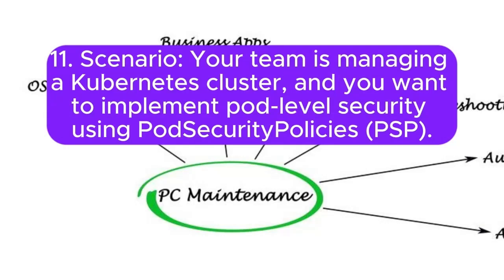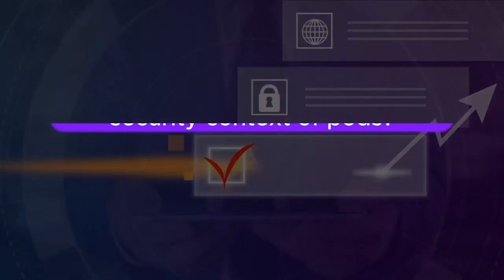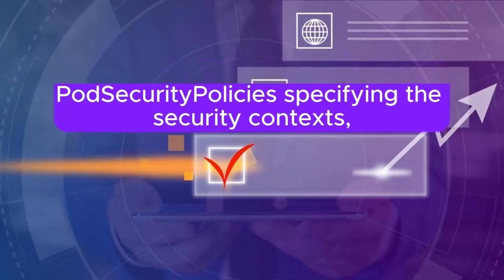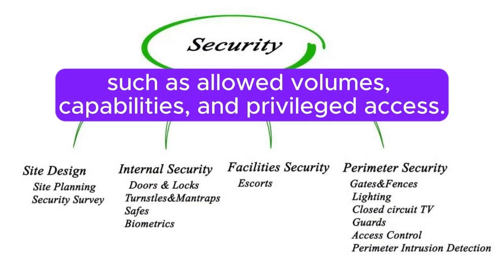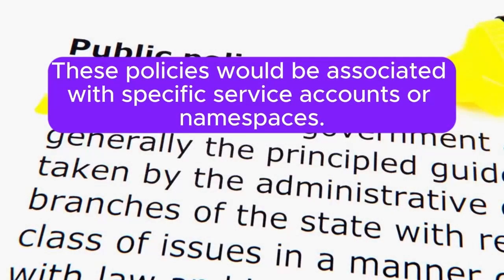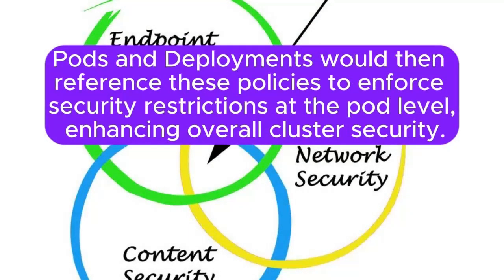Scenario 11: Your team is managing a Kubernetes cluster and you want to implement pod-level security using Pod Security Policies (PSP). How would you define and enforce pod security policies to control the security context of pods? Answer: I will create pod security policies specifying the security contexts, such as allowed volumes, capabilities, and privileged access. These policies would be associated with specific service accounts or namespaces. Pods and deployments would then reference these policies to enforce security restrictions at the pod level, enhancing overall cluster security.